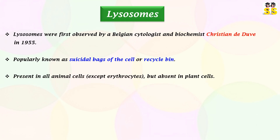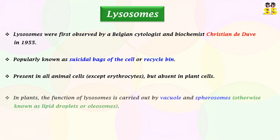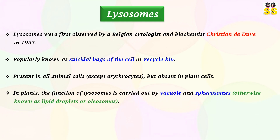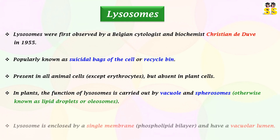They are present in all animal cells, except erythrocytes, but absent in plant cells. The function of lysosomes in plants is carried out by vacuole and spherosomes. Spherosome is a small plant organelle that stores fat.